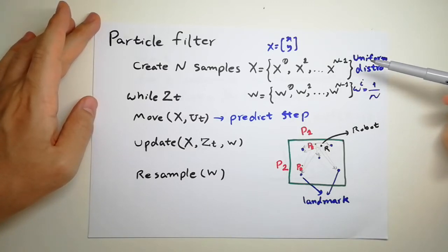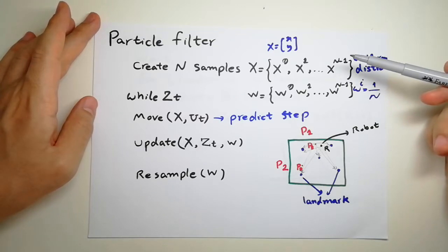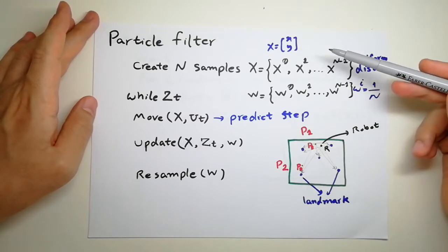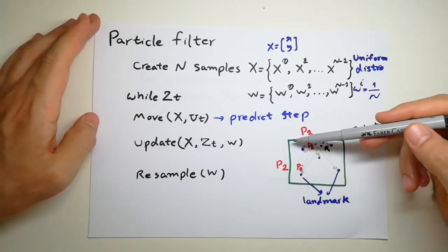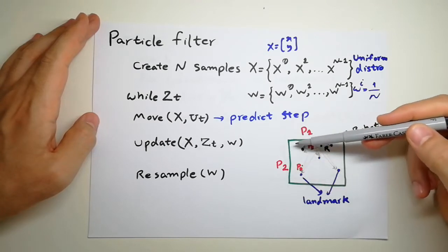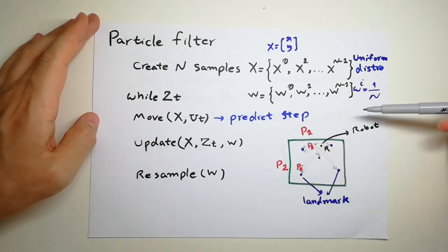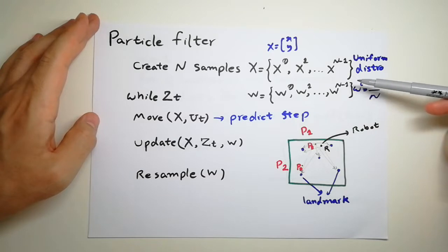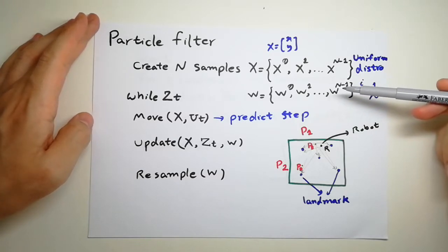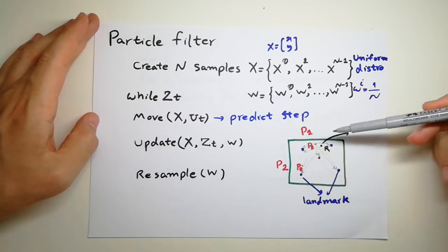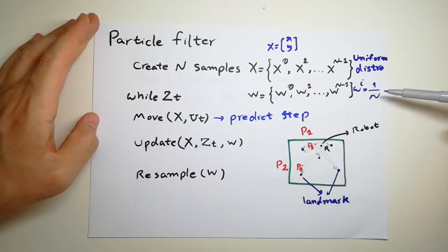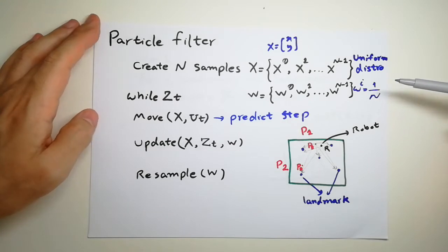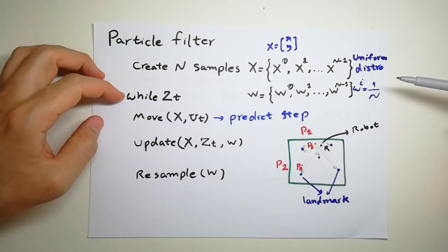Like any step in the particle filter, we create N samples. The state that we try to track is x and y, because we try to localize the robot. At the beginning we don't know where we are exactly — we might be anywhere on the map — so we use the uniform distribution and create N samples. We also don't know which one is closer to the robot, so the weights are equal and the sum should always be one, so 1/N is the weight for every particle.